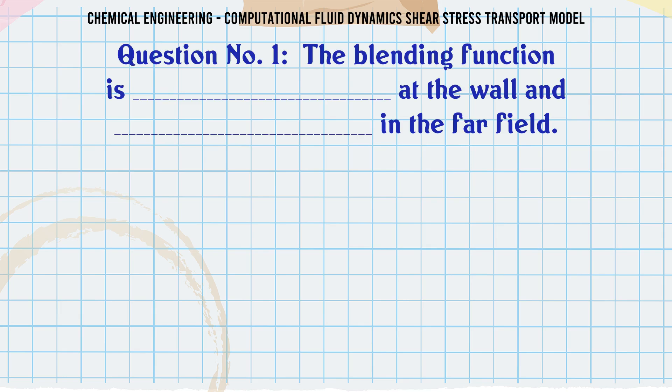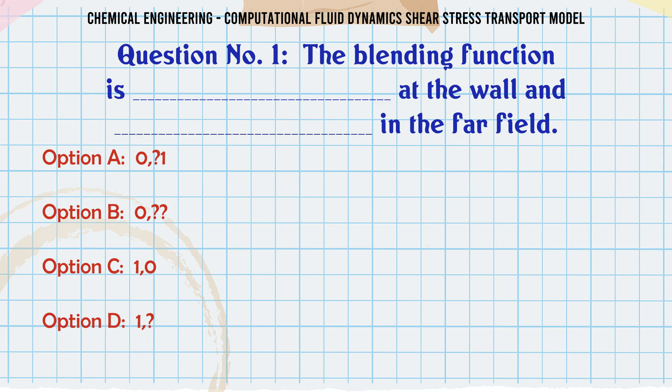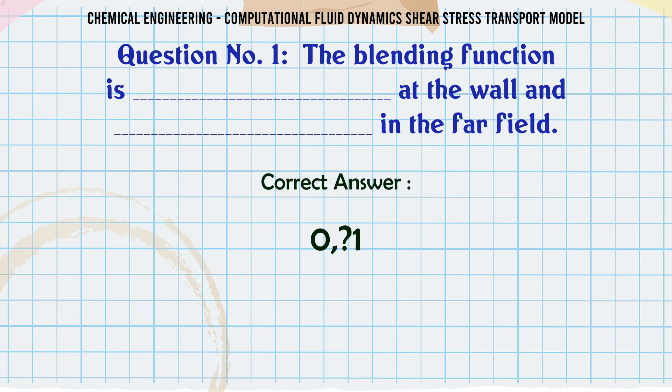The blending function is at the wall and in the far field: A) 0,1 — B) 0,0 — C) 1,0 — D) 1,1. The correct answer is 0,1.